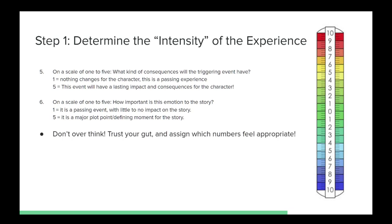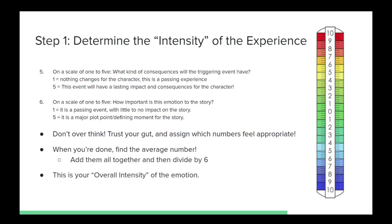Don't overthink these things too much. Trust your gut and assign the numbers that feel appropriate to each question. Once you've answered each of them, add the numbers together and then divide them by six. This will give you the average answer for all six questions and the overall intensity or energy level of the emotional experience in general.